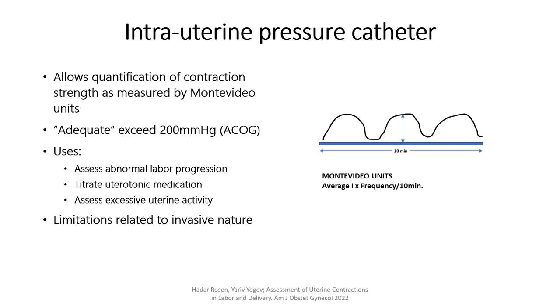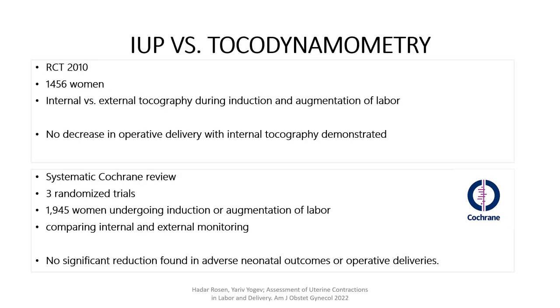Limitations are related to its invasive nature and occur at low rates, including infections, uterine perforation, fetal injury, and placental disruption. A comparison between external tocodynamometry and intrauterine pressure catheter has been the subject of a few investigations.